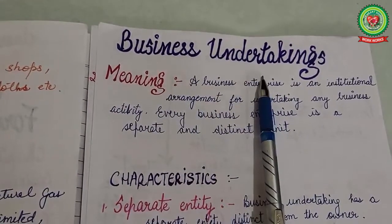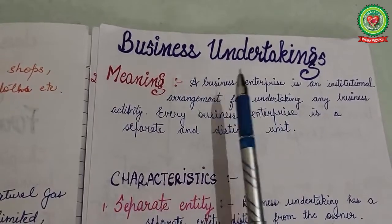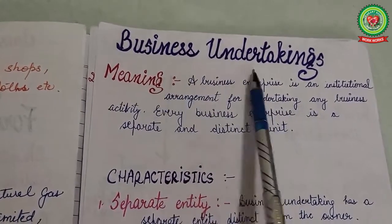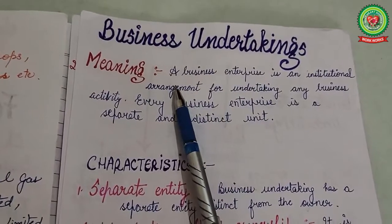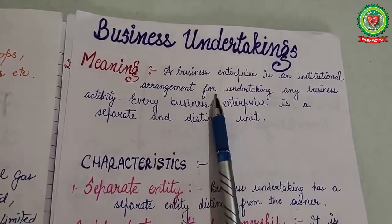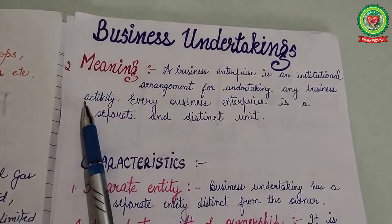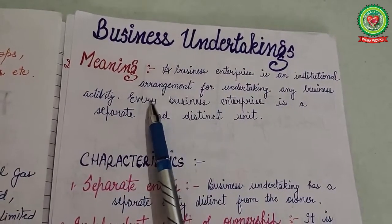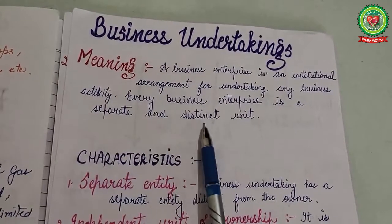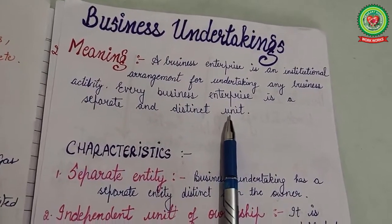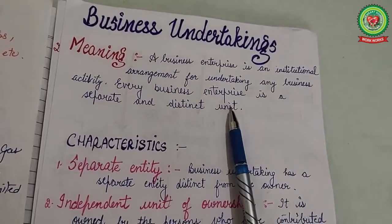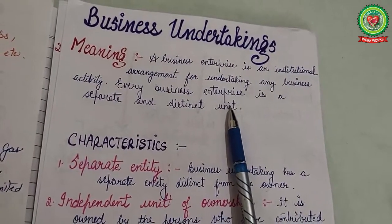Our first concept is business undertaking. Any business that is run to earn profit is called a business undertaking. A business enterprise is an institutional arrangement for undertaking any business activity. Each and every business enterprise is a separate and distinct unit. Business may be owned and controlled by a single individual or a number of individuals.